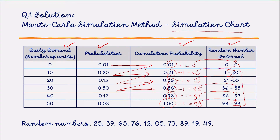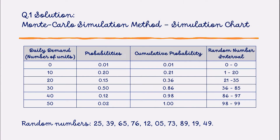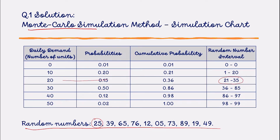After completing the simulation chart, we make one more chart for the Monte Carlo simulation. Using the given random numbers, we find the random number interval each number falls into and the related daily demand. For example, random number 25 belongs to the 21–35 group, so the daily demand is 20. Random number 39 belongs to the 36–85 group, so its demand is 30, and so on.